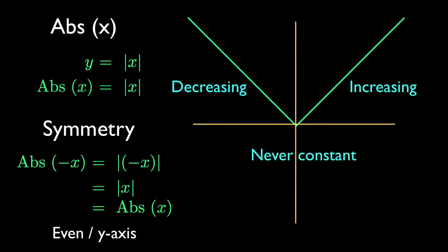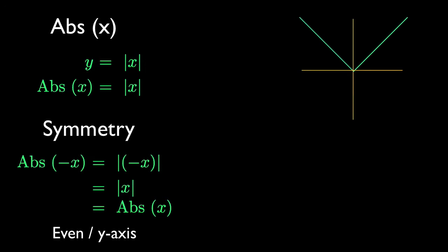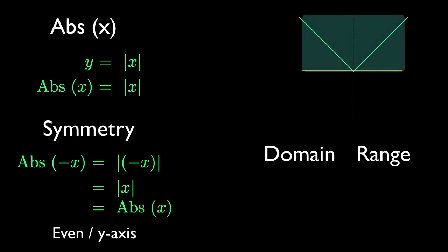Because it's not smooth at the origin, it doesn't have a distinguishable tangent line, and so there's no tangent line with zero slope, which is the mark of a constant function. Even though it's not smooth, because the function is continuous, we can read its domain and range from the width and height of the one continuous region. The function accepts x values between negative and positive infinity, and returns y values between 0 and positive infinity.